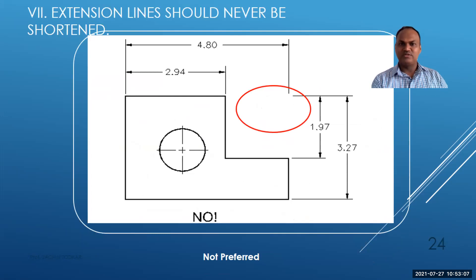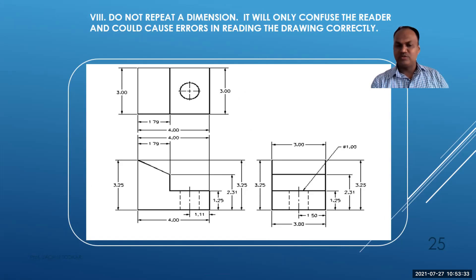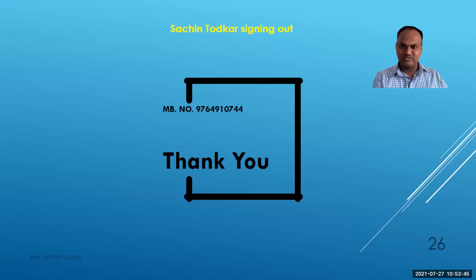Rule 7 — extension lines should never be shortened; they must be fully shown. Rule 8 — do not repeat a dimension, as it will only confuse the reader and could cause errors in reading the drawing. The same dimension should not be given in all three views; repetition of dimensions must be avoided as much as possible. These are the dimensioning rules for this lecture; more will be covered in the next lecture. Thank you very much — Sachin Todkar signing out.